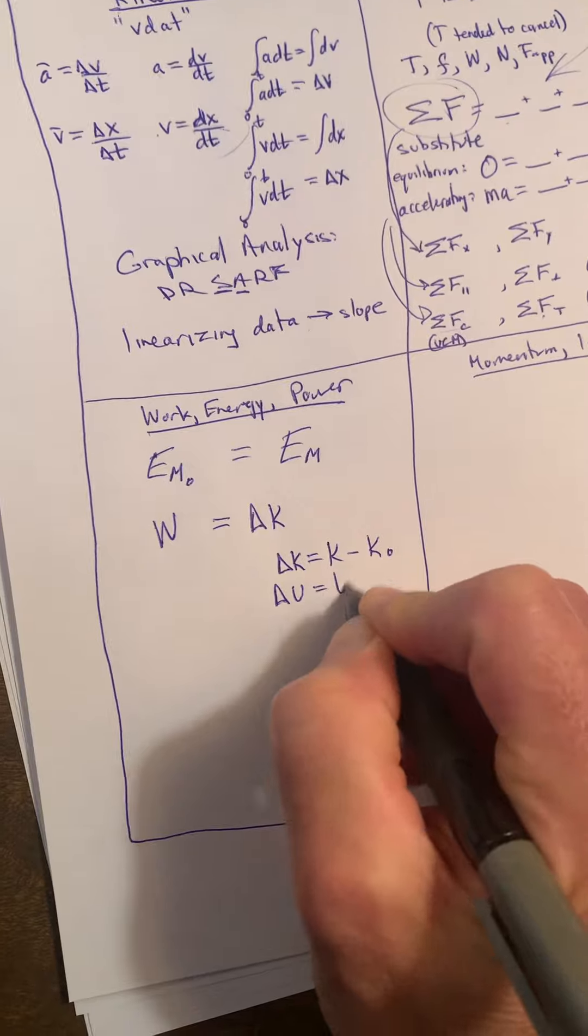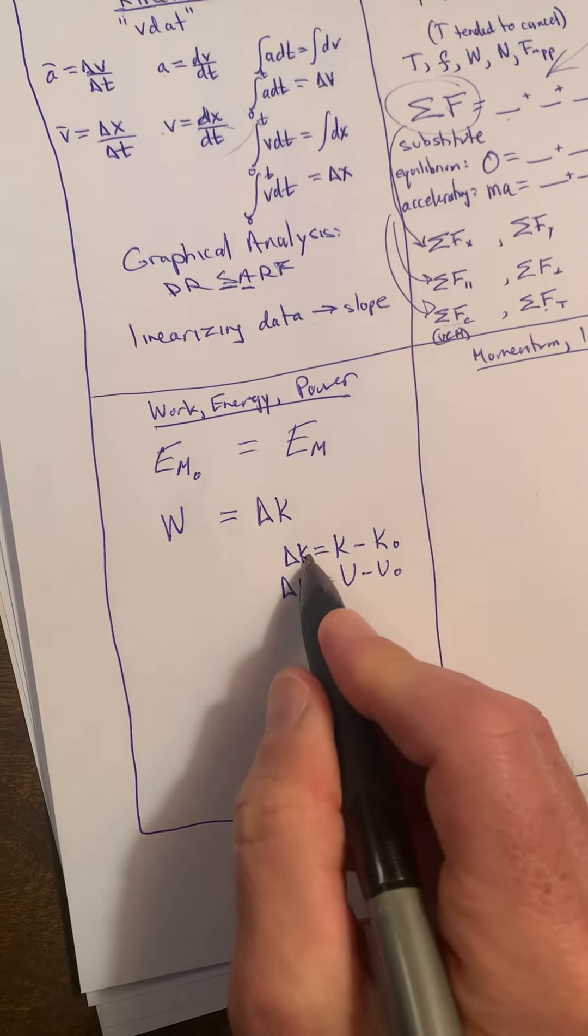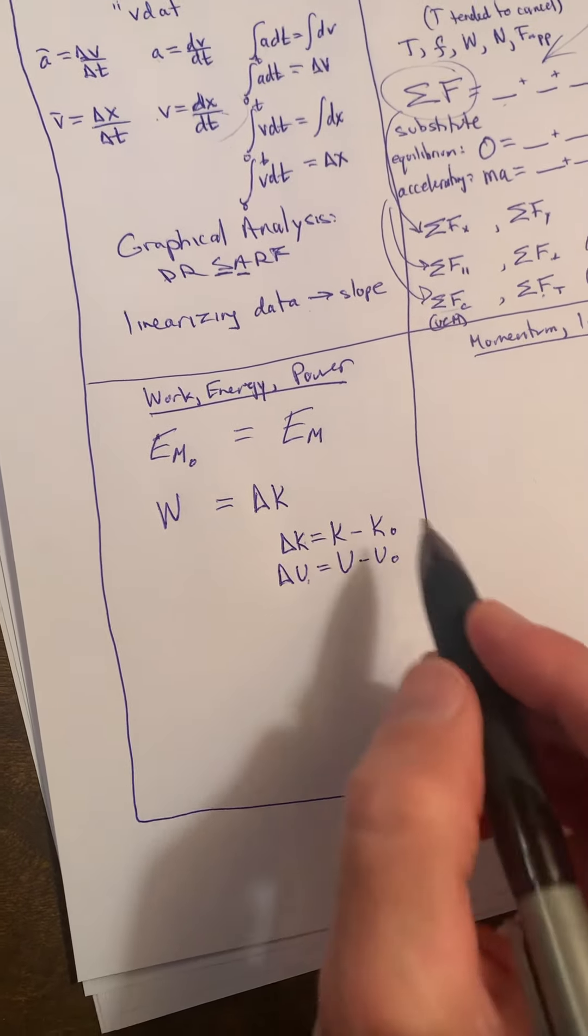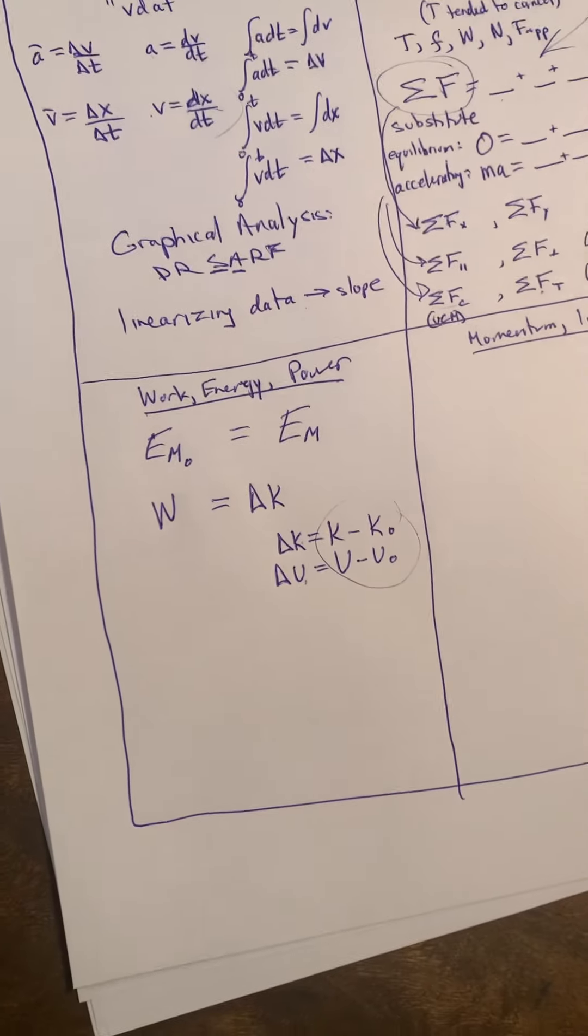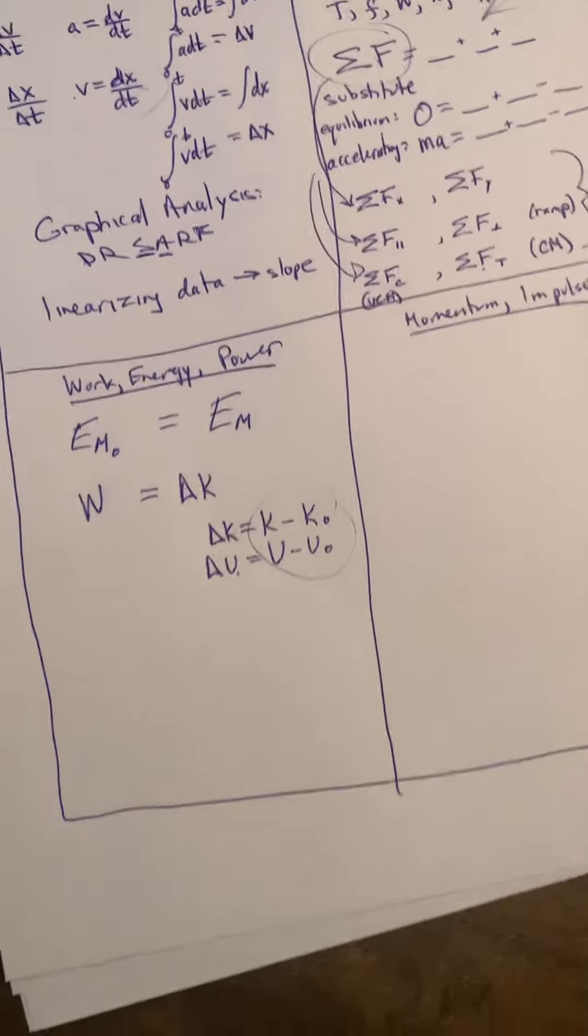Δu is u final minus u initial, particularly for the spring or for kinetic energy. Since these two depended on a squared term, just make sure you're thinking of the delta like this, because sometimes people slip the delta into the equation and just square the change, and it then turns out to be wrong.